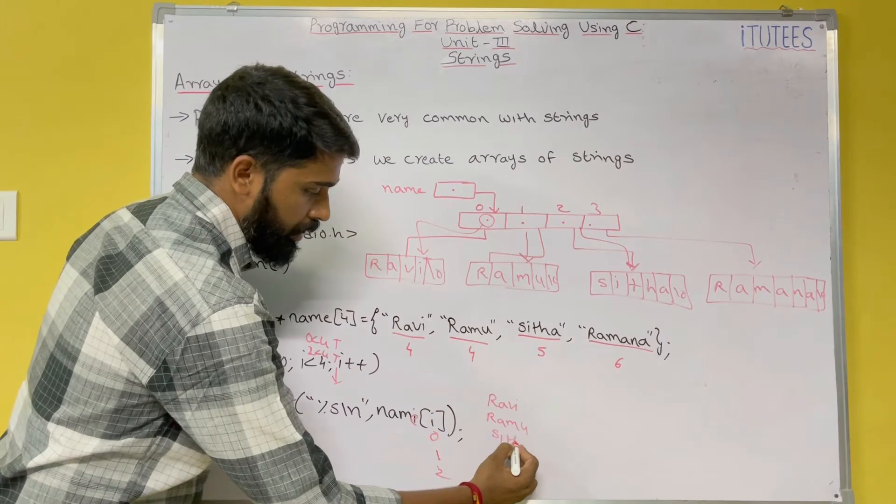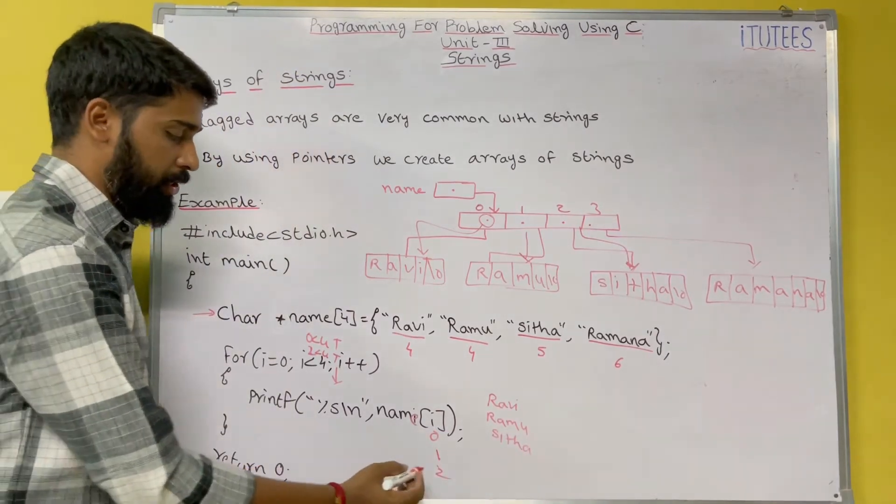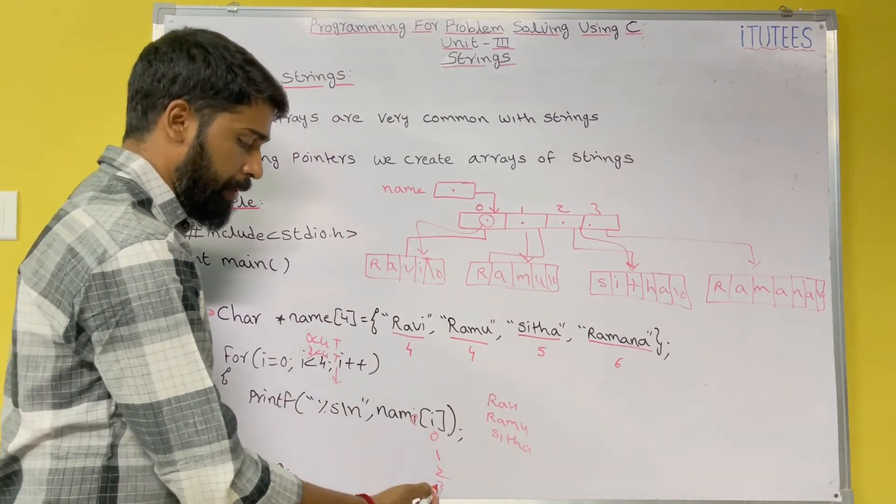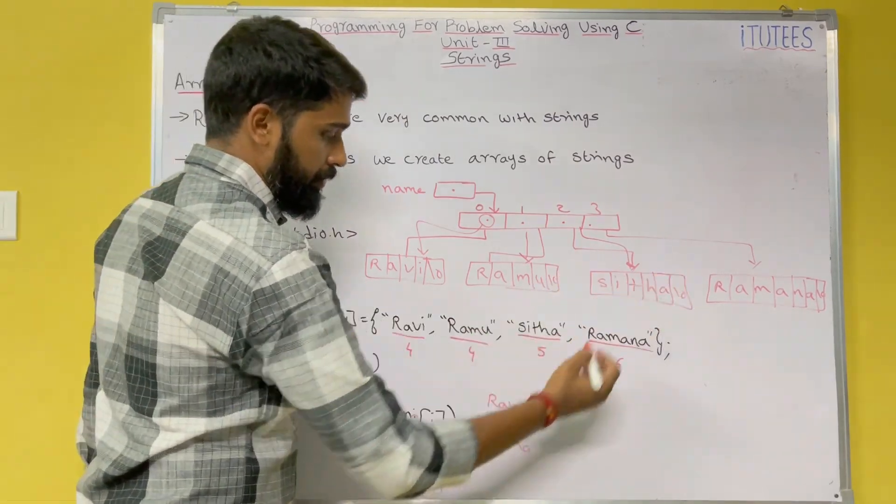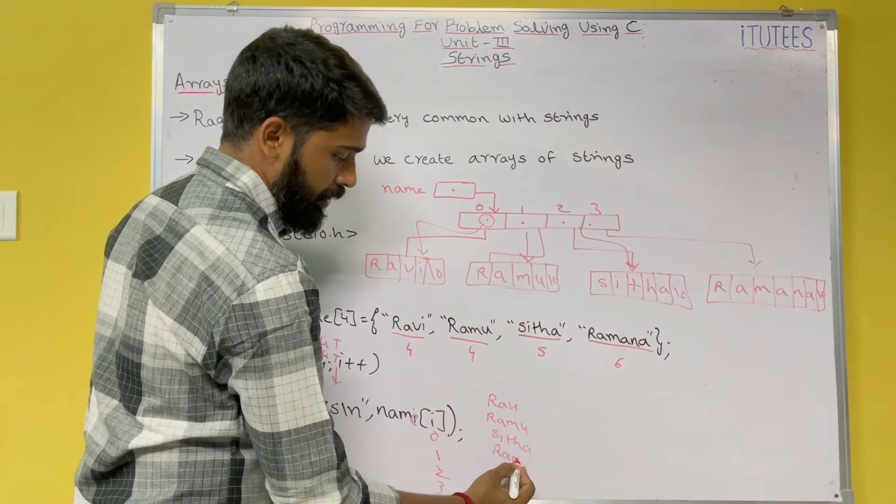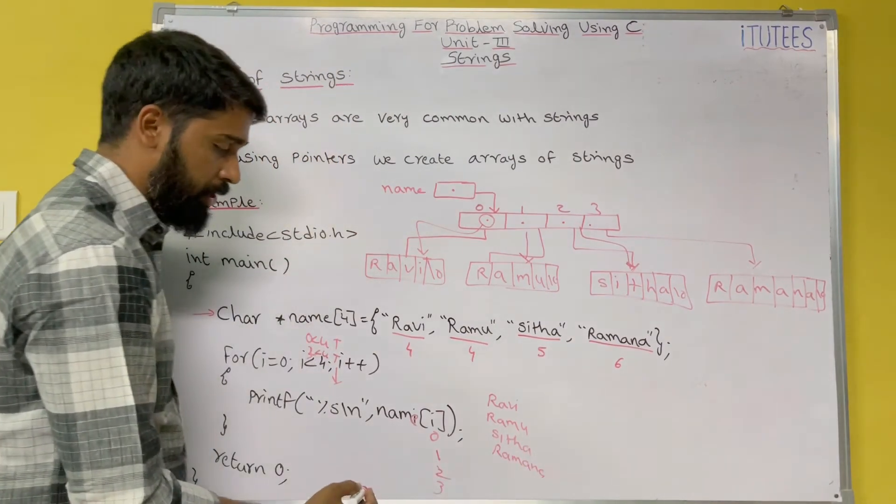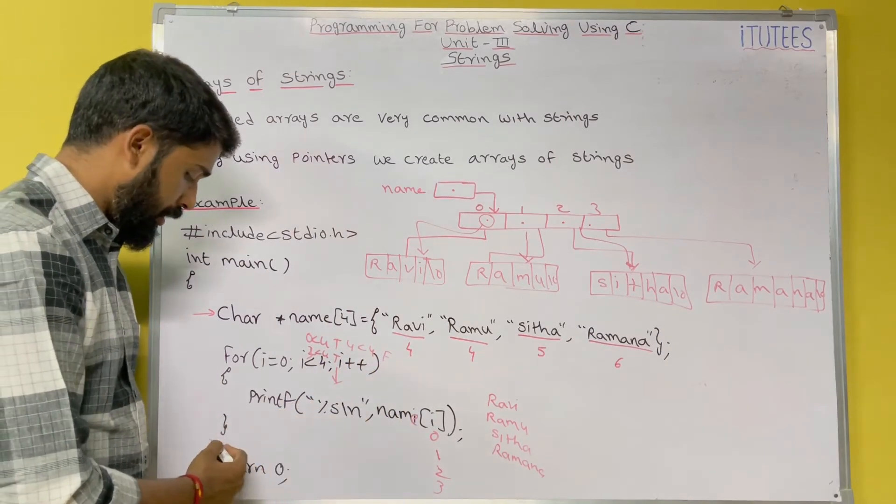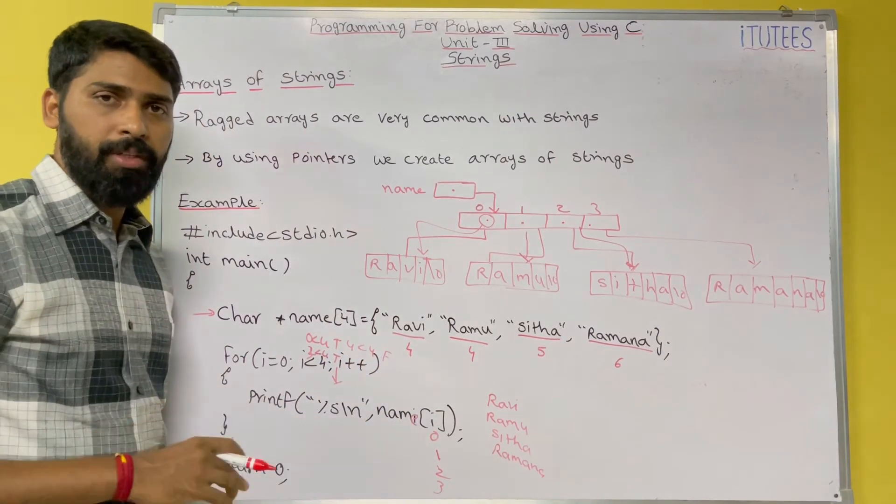In next iteration, it becomes 3. 3 less than 4, true. Enter into the block. Print name[3]. What is name[3]? Ramana. In next iteration, it becomes 4. 4 less than 4, false. Terminate the loop. That's it.